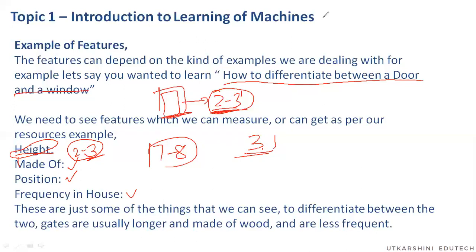They don't even just learn features — they learn the patterns in the features. Every particular object, every particular item for them is some sort of pattern in some of the features those items have. How do we learn the pattern? That's what machine learning is all about. It learns the pattern, so if it sees a pattern in the same feature, it will classify it the same way.